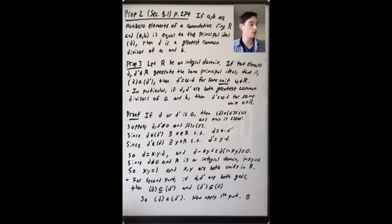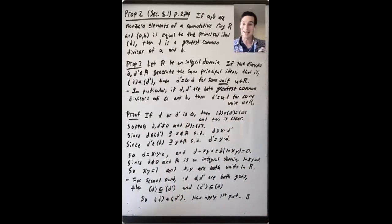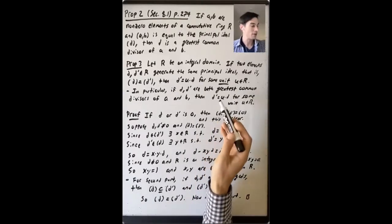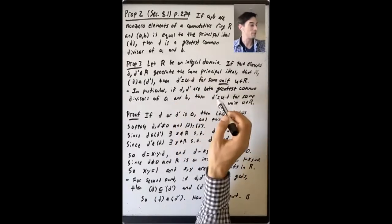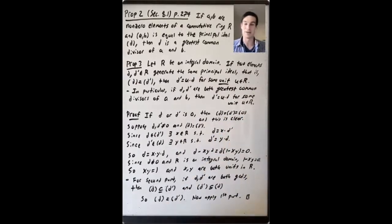So in particular, if these two elements are both greatest common divisors for A and B, that is, they are both generators for the unique smallest principal ideal containing A and B, then how are they related? D' is equal to a unit times D for some unit U in R.